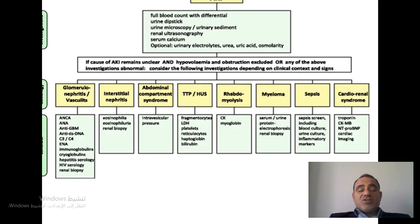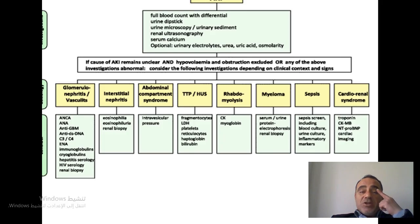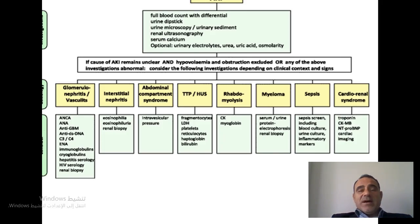Additional targeted investigations include: hepatitis B and C serology, HIV serology, and in cases of glomerulonephritis or vasculitis, renal biopsy should be considered. If interstitial nephritis is suspected, we look for eosinophilia in blood and urine, and the gold standard is renal biopsy. If microangiopathies such as TTP or HUS are suspected, we look for schistocytes (fragmented RBCs) on blood film, LDH, platelet count, reticulocyte count, haptoglobin, and serum bilirubin. For suspected rhabdomyolysis, we measure myoglobin and CK.